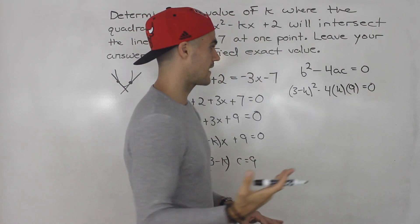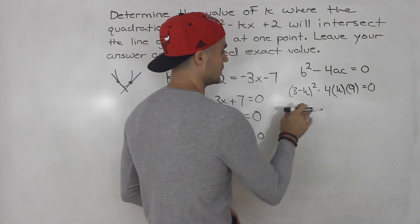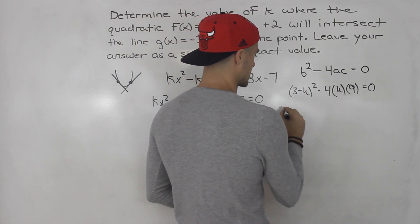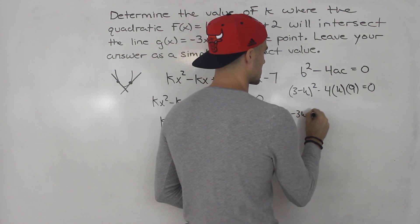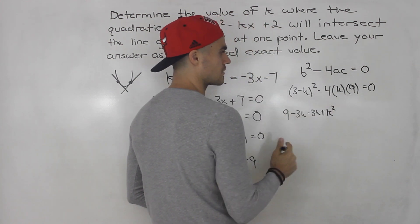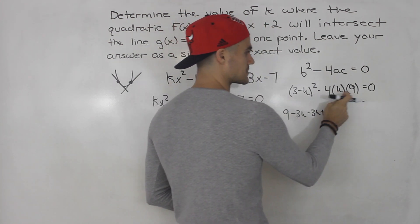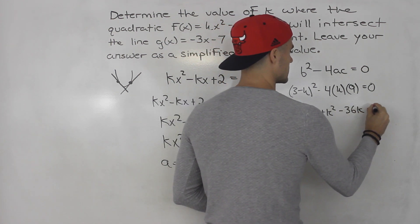And from here, we just have to expand everything, simplify, and then we'll have a quadratic to solve. So 3 minus k times 3 minus k, that would give us 9 minus 3k minus 3k plus k² if you foil those two brackets out. And negative 4 times k times 9, that gives us negative 36k. That's going to equal zero.